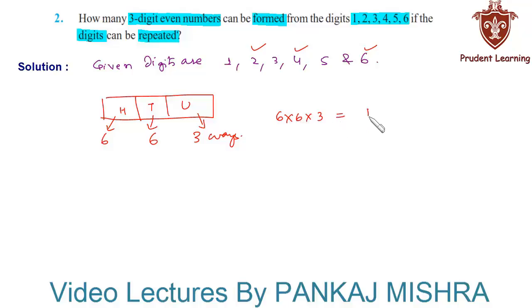Hence, when the repetition of digits is allowed, the number of three-digit even numbers that can be formed using the given digits is 108. This completes our solution.